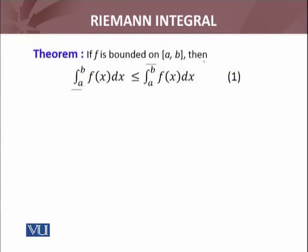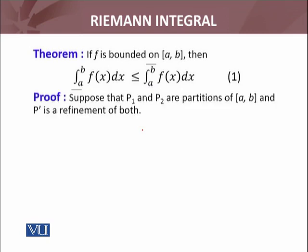So let's see the result. If f is bounded on the closed interval, then the lower integral of f(x) over the interval [a, b] is always less than or equal to the upper integral. And you can see this graphically as well. When you look at the upper sums and lower sums, their infimum and supremum—you can see this particular mathematical result graphically. But I am going to prove it mathematically.